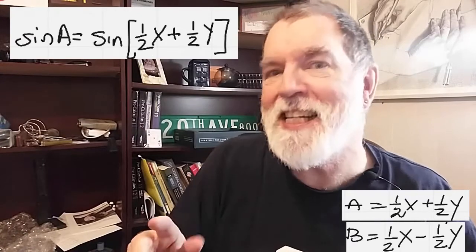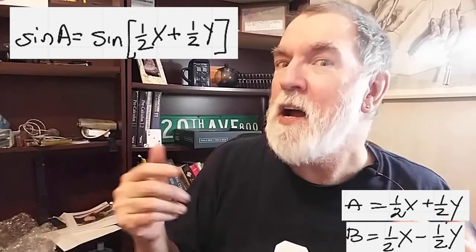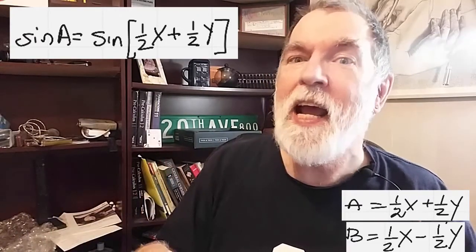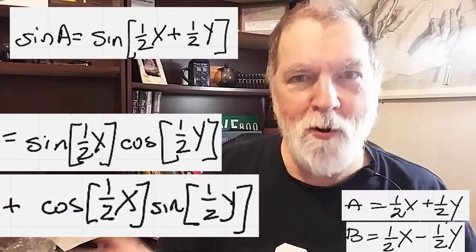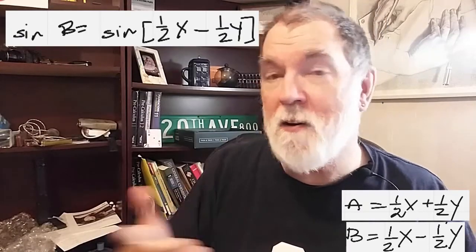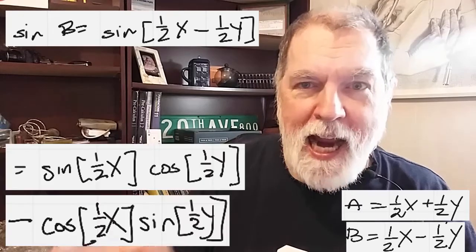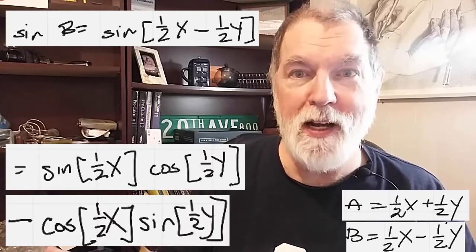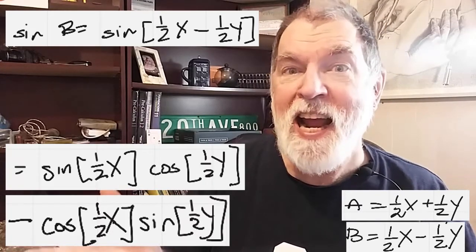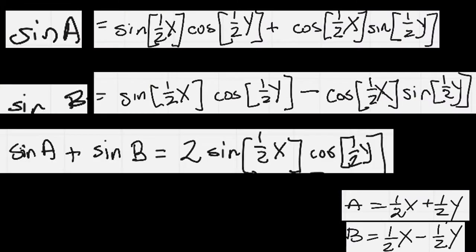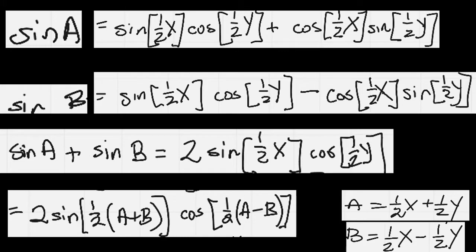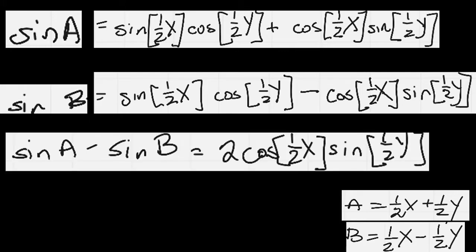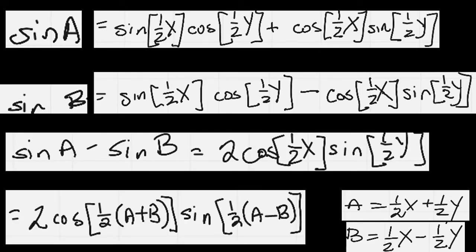Next, express the sine of A using the angle sum formula, and the sine of B using the angle difference formula. This gives us an expression for the sine of A plus the sine of B, as well as an expression for the sine of A minus the sine of B.